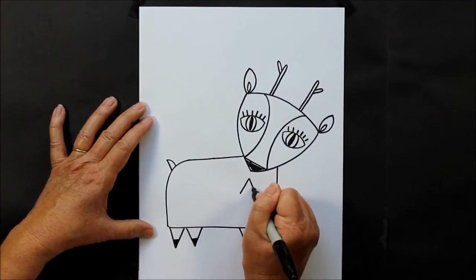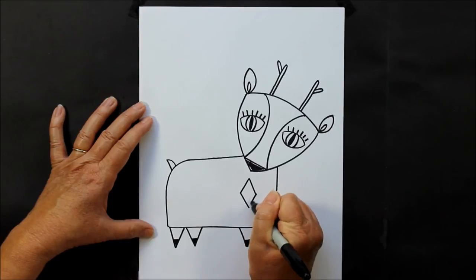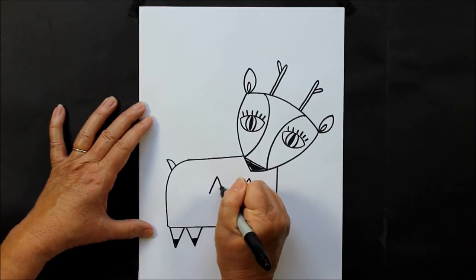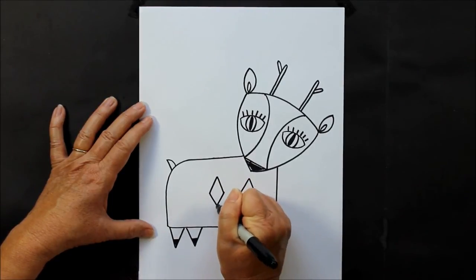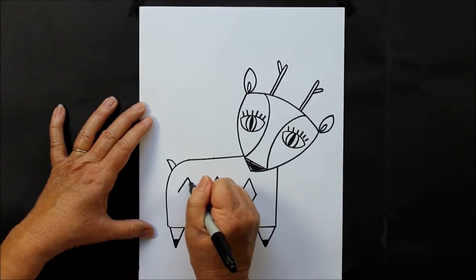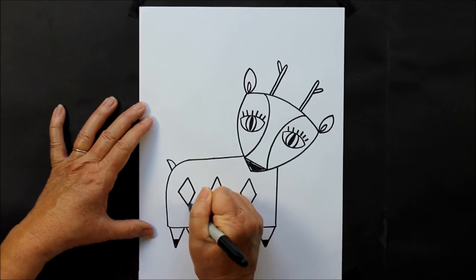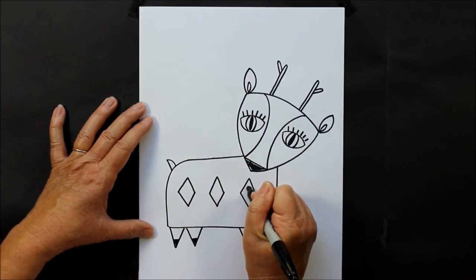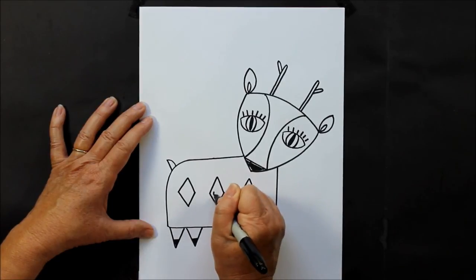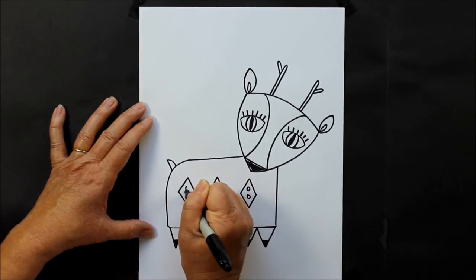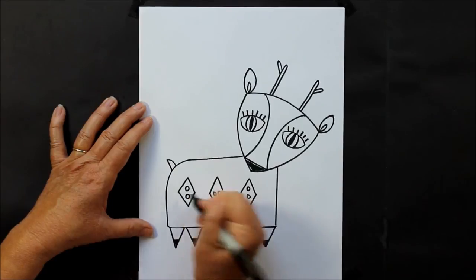And then maybe fill those in with some dots. Maybe I'll fill this in with a couple dots, this in with a couple dots, and this in with a couple dots. It just gives a little bit more detail.